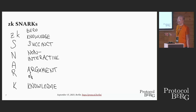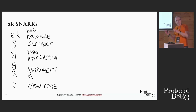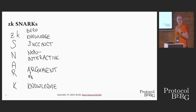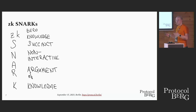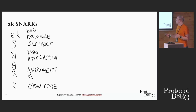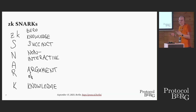We can understand SNARKs by deciphering the acronym back to front. A SNARK is an Argument of Knowledge — you have a prover and a verifier, and the prover wants to convince the verifier that they actually know something. That 'something' is very general: you can basically turn any kind of computation into something you can get an argument of knowledge for. For example, 'this block is a valid extension of that one' — that's something you can put into a SNARK.